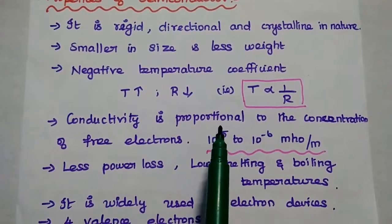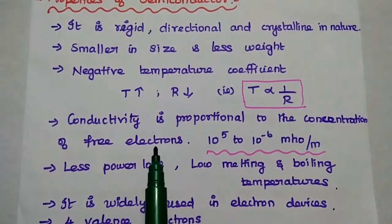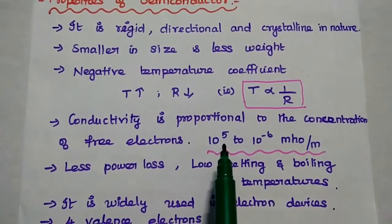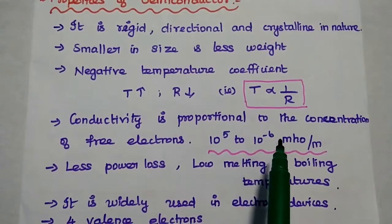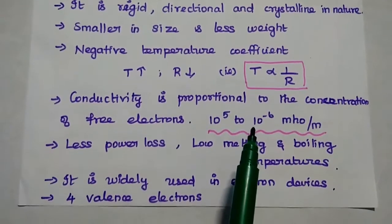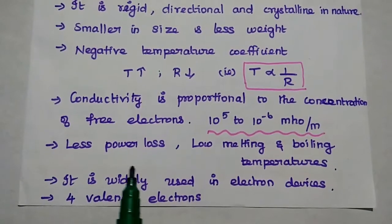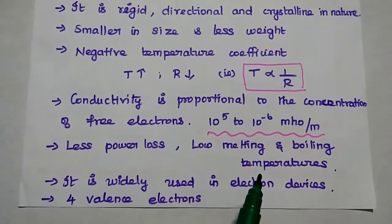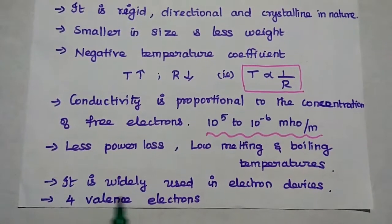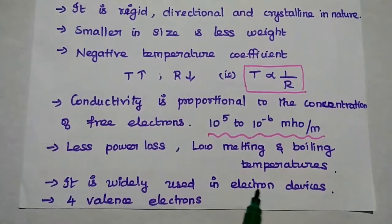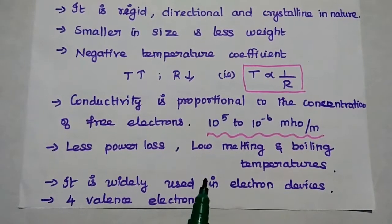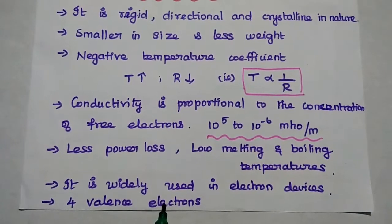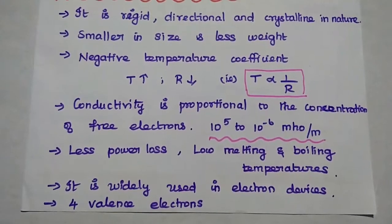The conductivity is proportional to the concentration of free electrons. Its conductivity value ranges from 10⁵ to 10⁻⁶ siemens per meter. It has less power loss and low melting and boiling temperatures. It is widely used in electronic devices, and it has 4 valence electrons in its outermost orbit.